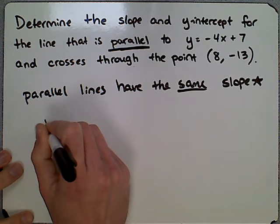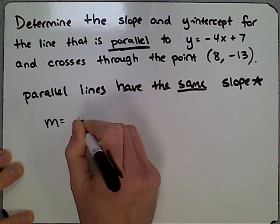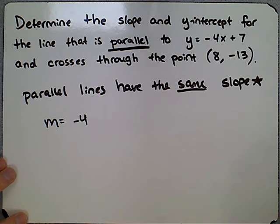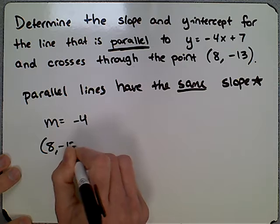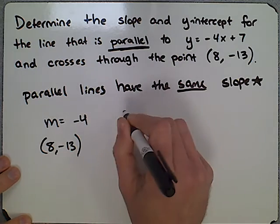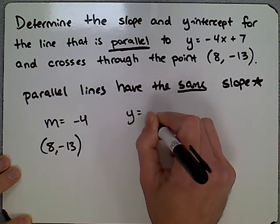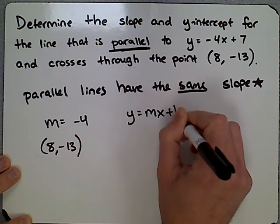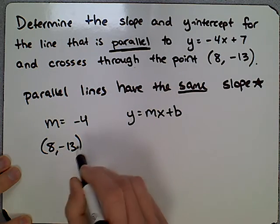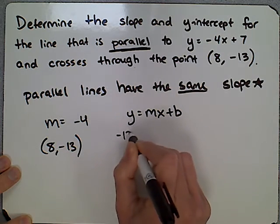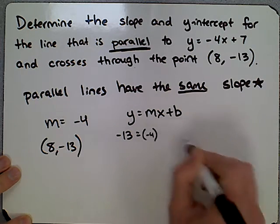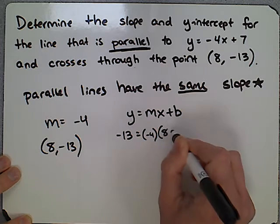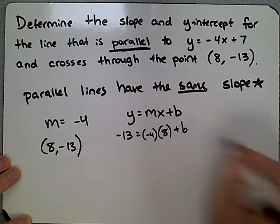What that means is our new slope is going to be -4 because our old slope was -4. We want to use that (8, -13) and plug all three of these values into our generic slope-intercept form equation, y equals mx plus b. The y value in this case is -13. The m value, the slope, is -4. The x value is 8. And we will solve for the b value.